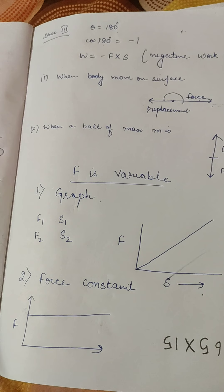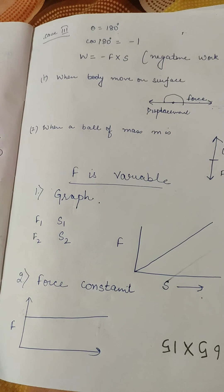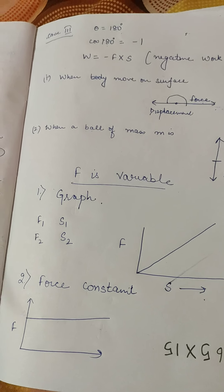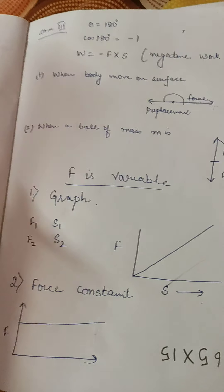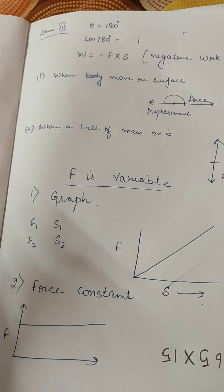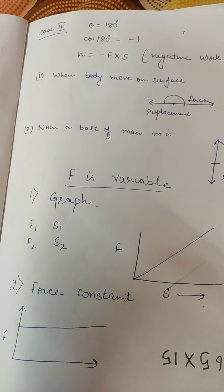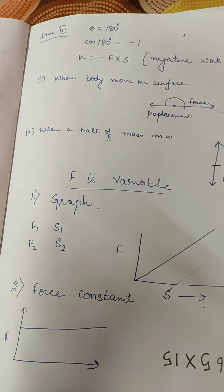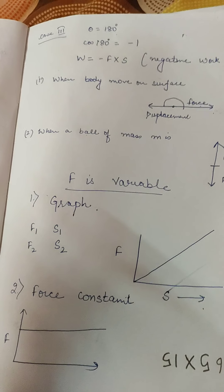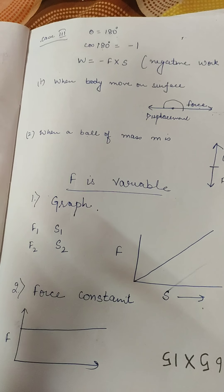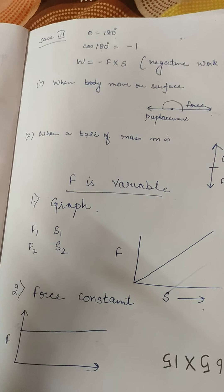If force is constant and force is on the Y axis, we will get a straight line. That is the graph for work done by a constant force — a straight line.